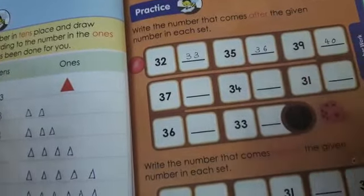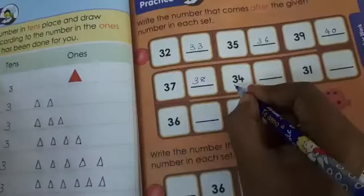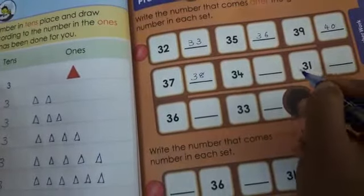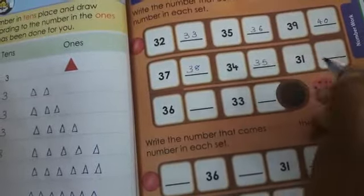3, 7, 37. Next number 3, 8, 38. 3, 4, 34. Next number 3, 5, 35.